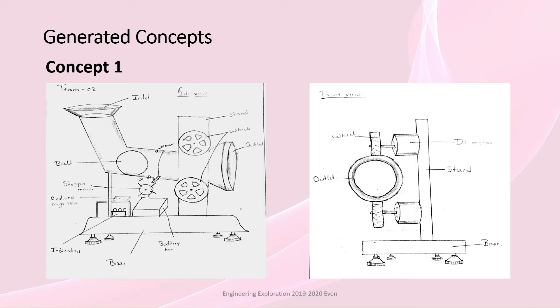After identifying all the functions and making a morphological chart for the same, we have generated 4 concepts. Concept 1 is based on the mechanism of 2 DC motors, which are attached to 2 wheels that launch the ball.